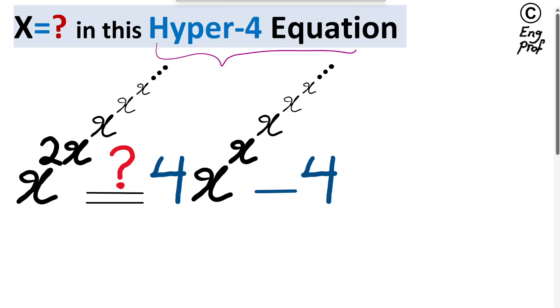In this hyper-4 equation, or infinite power tower, or super exponentiation that is shown here, we want to find and see whether there is a solution for x, whether this equation is solvable. So what is the value of x? Can we find it quickly?